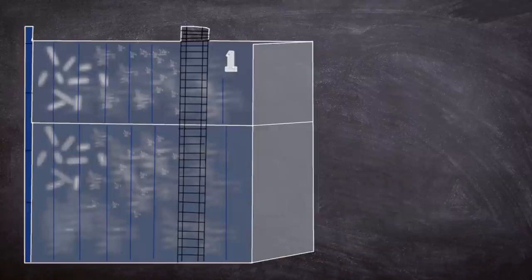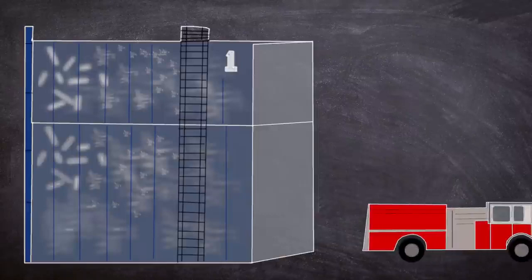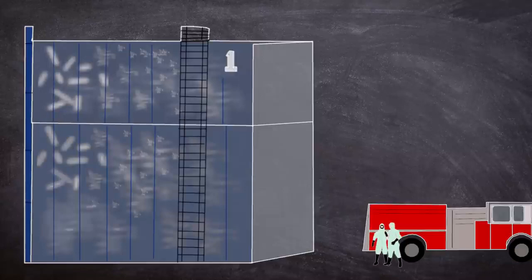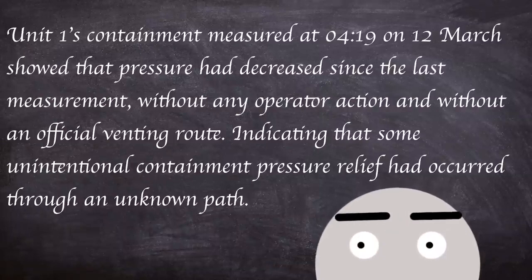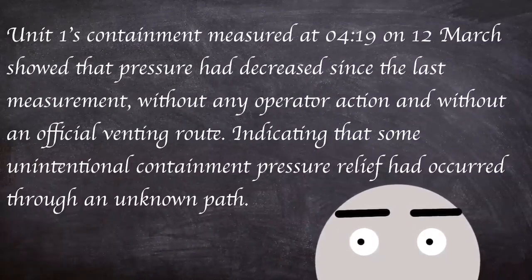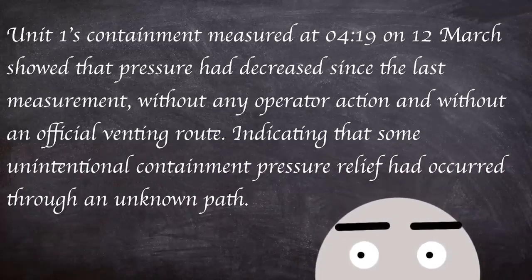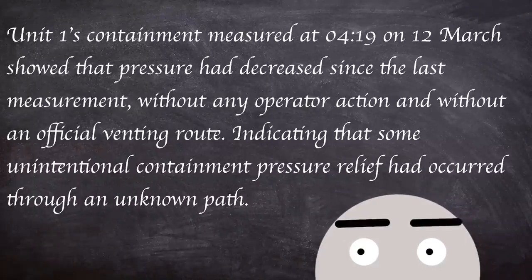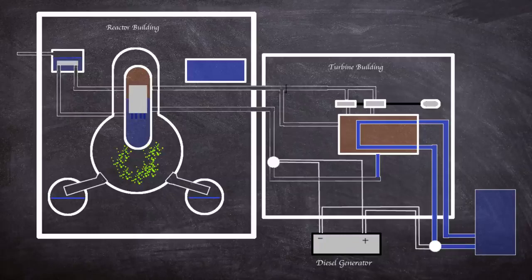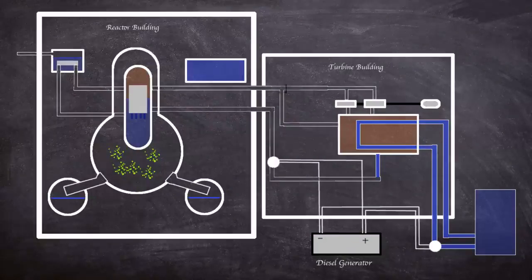At 4 am, an alternate cooling system was put into operation using fire trucks pumping seawater into unit 1, as vessel pressure had reduced. Unit 1's containment measurement at 4:19 am showed pressure had decreased without operator action and without an official venting route, indicating unintentional containment pressure relief through an unknown path. This, coupled with increased radiation levels, hinted at reactor vessel damage.